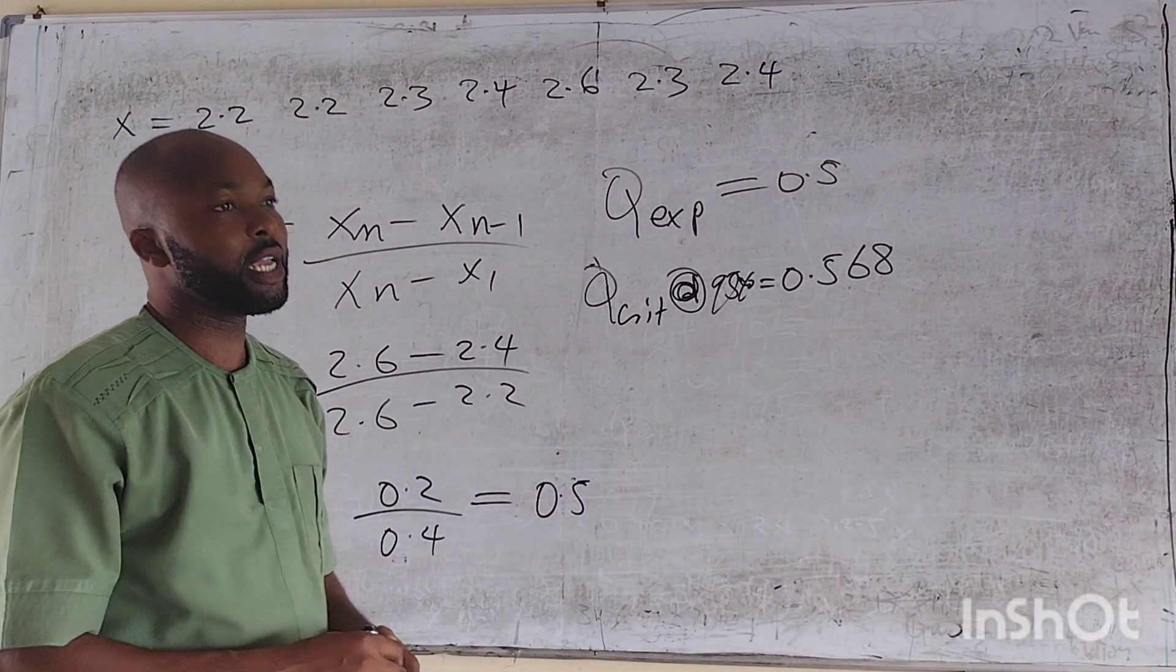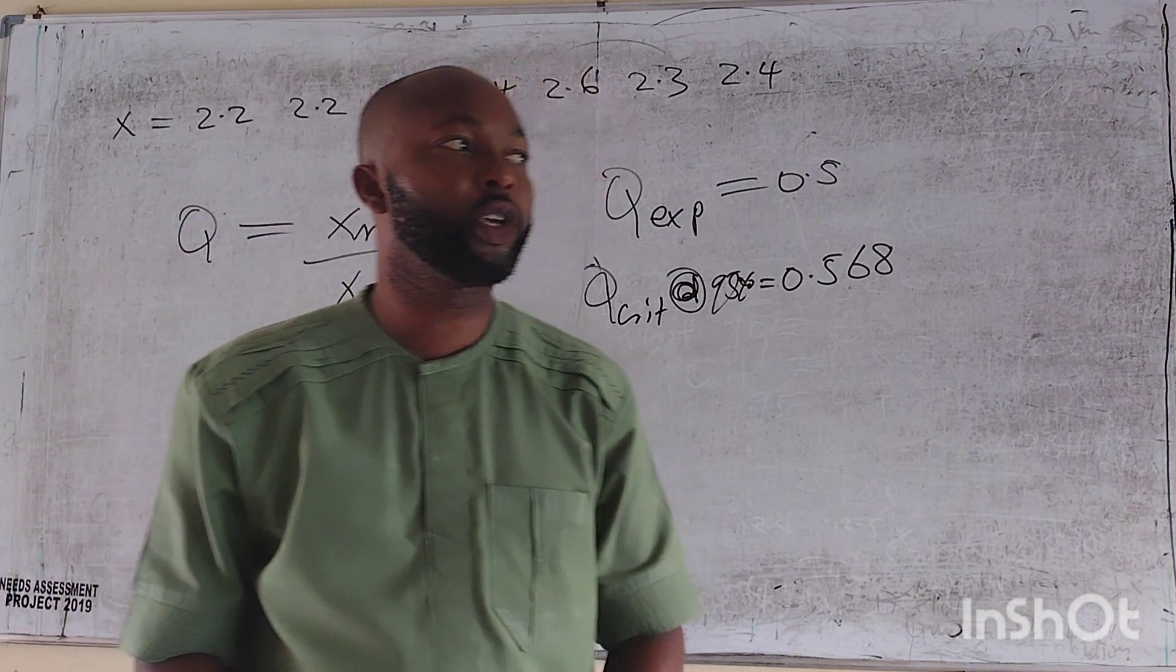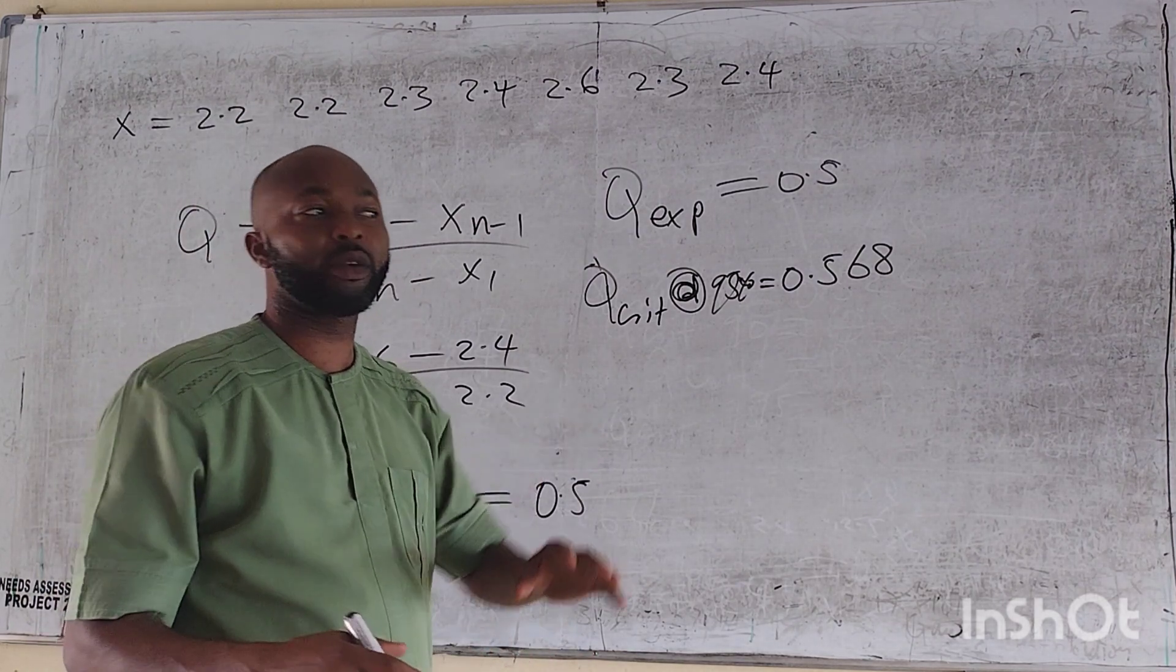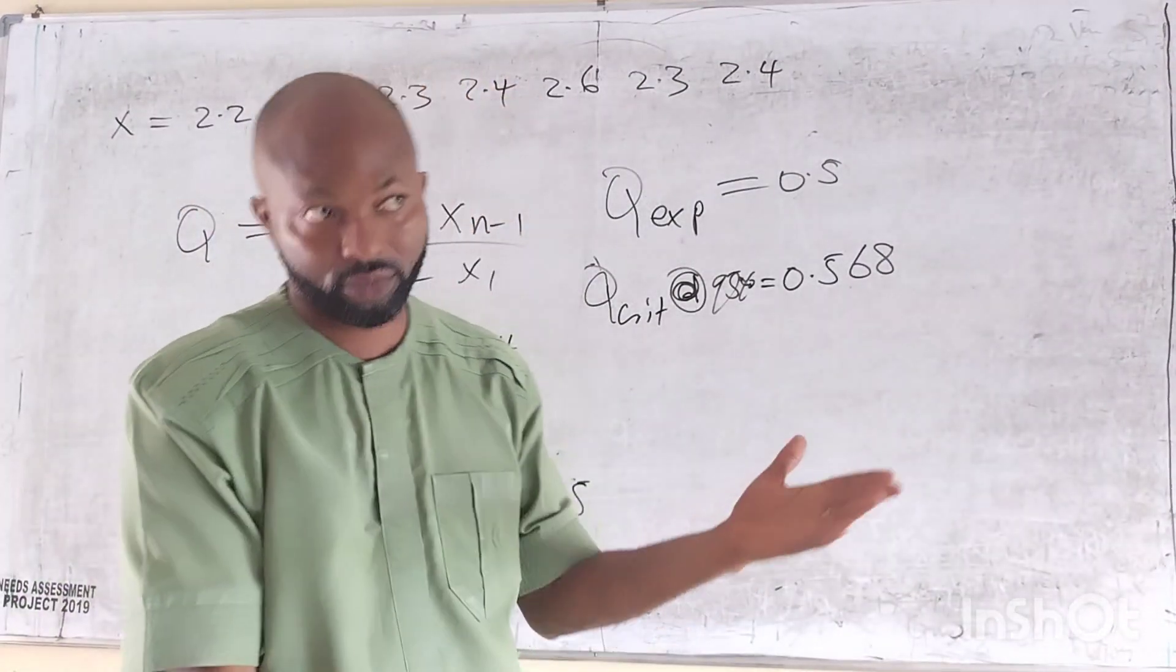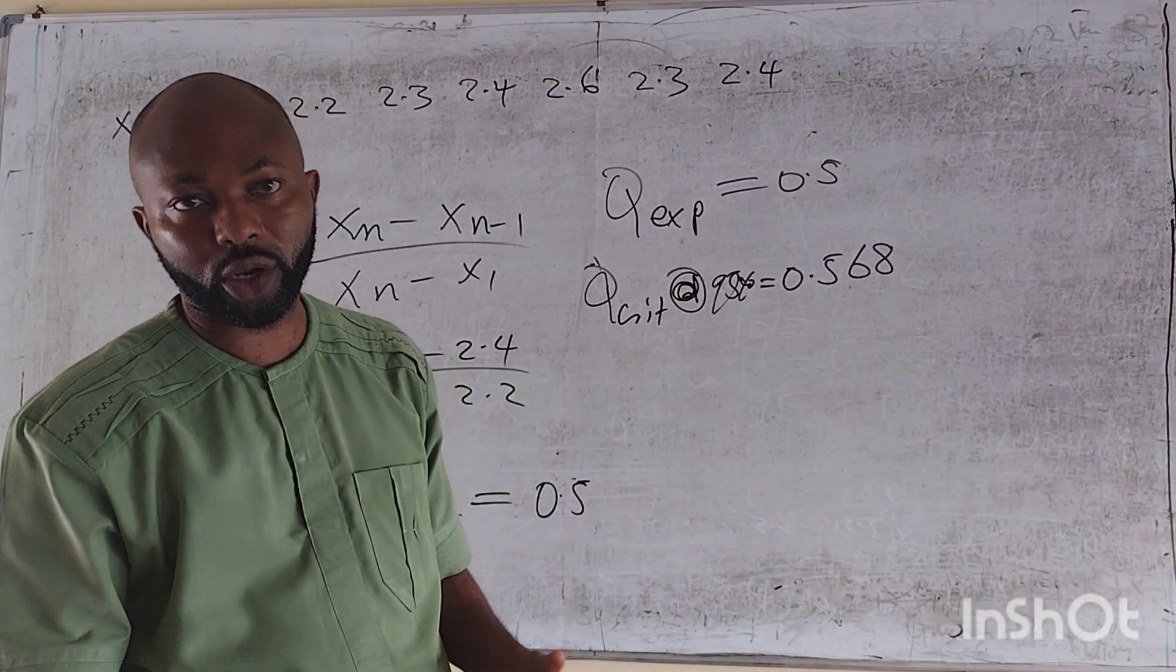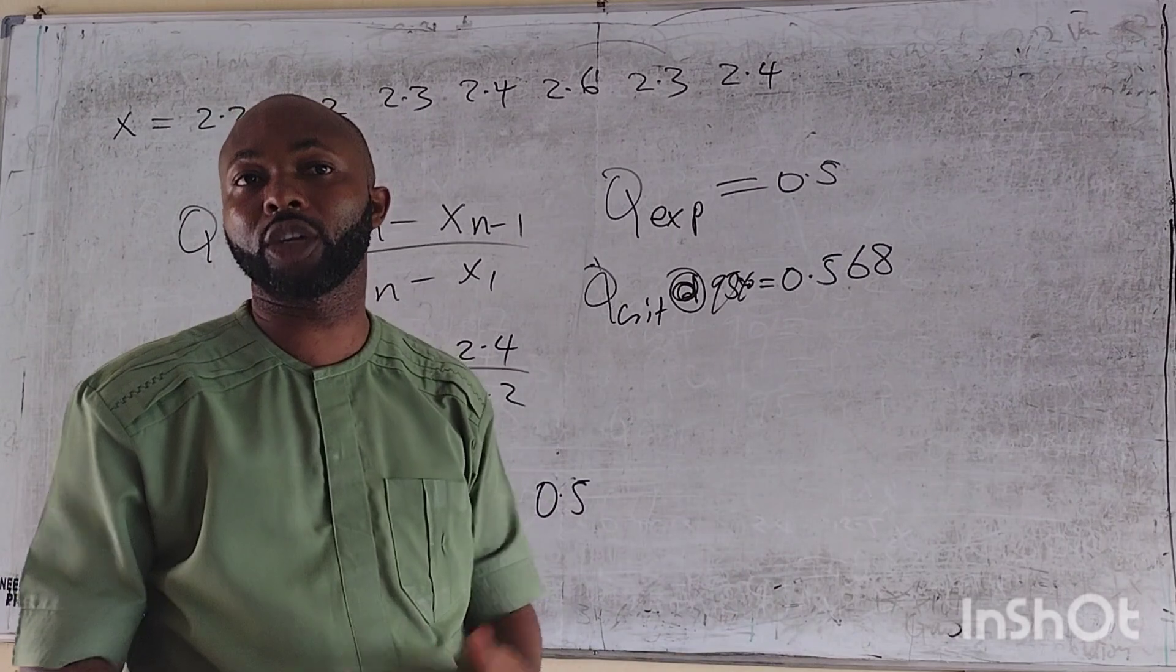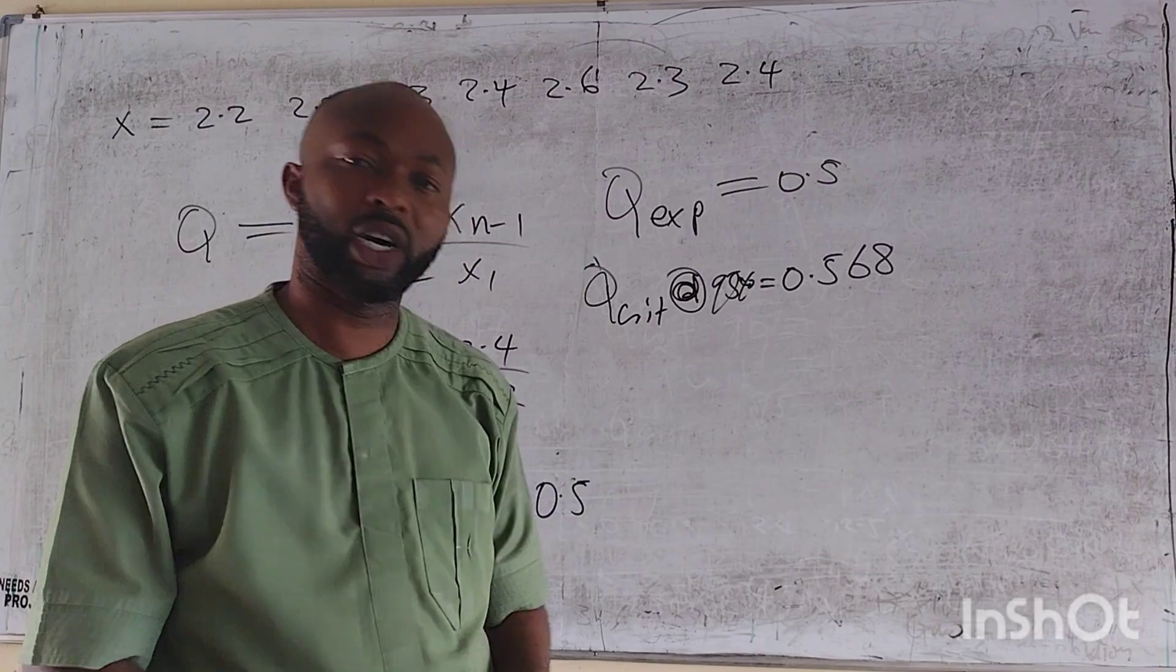We can call it off here in our confidence interval. With our full knowledge of the Q-experimental and Q-critical, we'll be able to determine as to whether we should maintain or reject a variable. Most importantly, when we're carrying out researches in the lab, like titration and so forth, you have an outlier which is greater than the usual. You have to subject it into the Q-test experiment. And if it is successful, you retain. If it is not, you reject. But we come to the end of the class. Thank you and have a nice day.